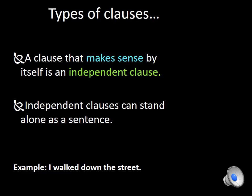Today we're going to be talking about two different types of clauses. The first is called an independent clause. An independent clause is something that makes sense by itself — it can stand alone as a sentence. Here we have our example: 'I walked down the street.' That is one single independent clause. It starts with our subject, we have the verb 'walked,' which is also our predicate, and this idea makes sense. It completes a thought and can stand alone by itself.